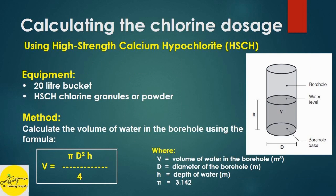Calculating the chlorine dosage using high strength calcium hypochlorite. Equipment required: a 20-liter bucket, and HSCH chlorine in granular or powder form.